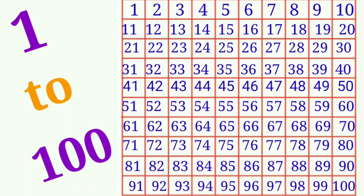100 is the smallest three digit number. See children, these are the numbers from 1 to 100.